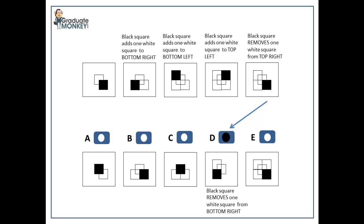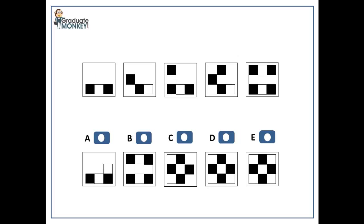The next example will be a similar type of sequence with variation in pattern formation. On this slide, you can see a series of patterns that contain black and white squares. Notice that the number of squares increases from one pattern to another, and any two black-colored squares are separated by a white square. Imagine you are looking at a snake with black and white spots that is entering from the bottom-right part of the larger square and moving up clockwise. The snake's head consists of a black square. In the first pattern, you see only a part of the snake's body. In the second pattern, it glides one step further so you can see more of it. In the third pattern, it moves one more step to the top of the larger square and so on.